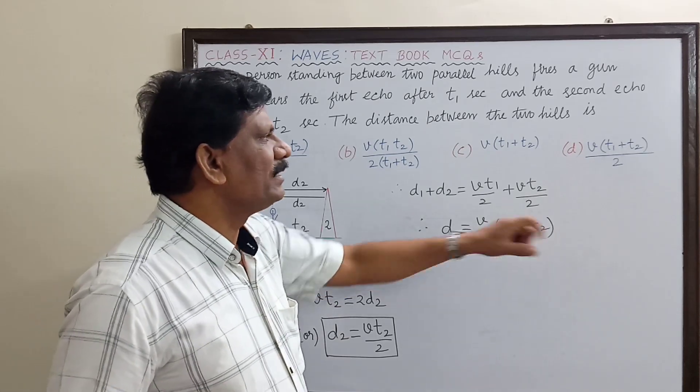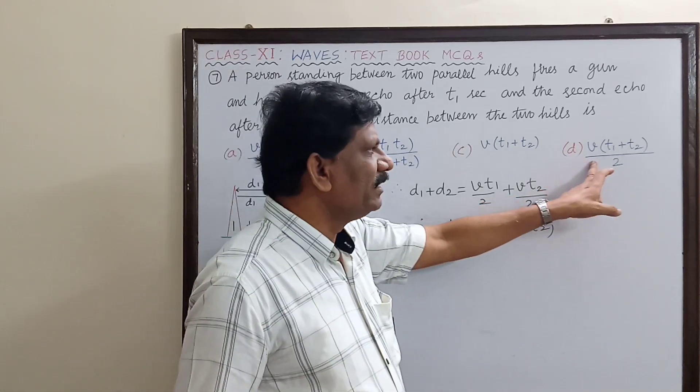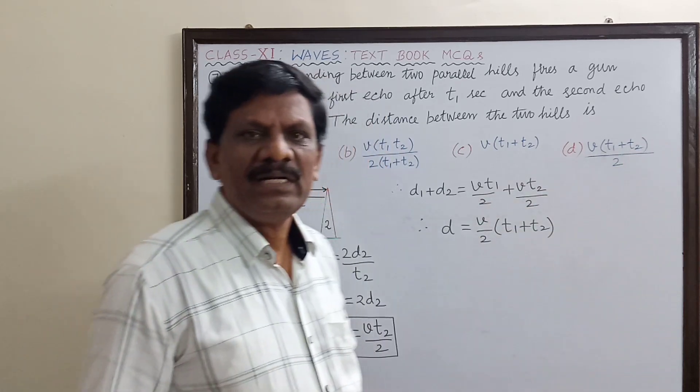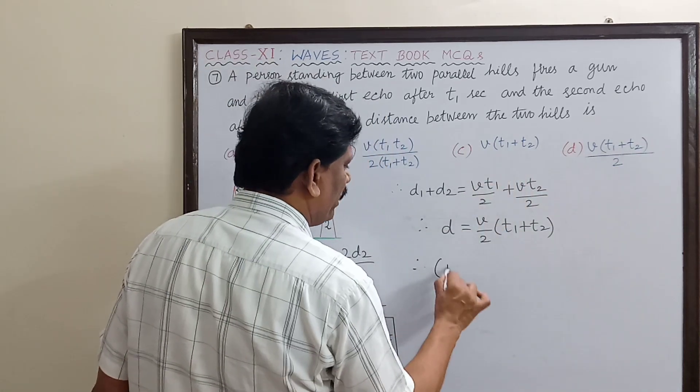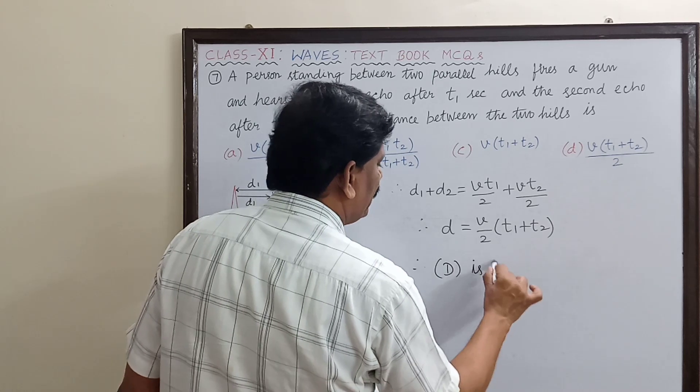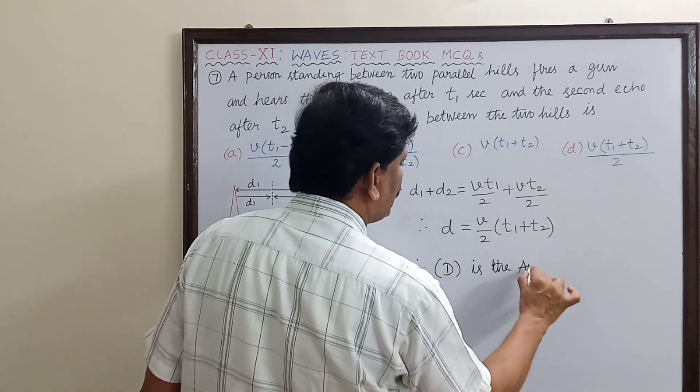Therefore, the distance between the two hills is equal to v by 2 times (t1 plus t2). So option D is v by 2 times (t1 plus t2). That is the right option. Therefore, option D is the correct answer.